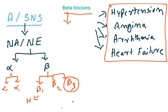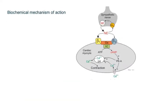Beta 3 receptors are not completely explored. Beta 1 receptors are primarily present on the heart, whereas beta 2 receptors are present on the respiratory tract. Today's topic is about these receptors and what happens with them.